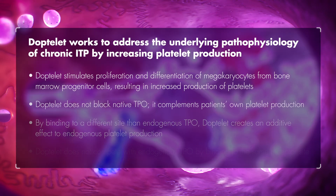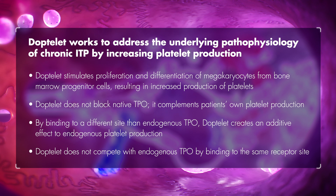DopTelit works to address the underlying pathophysiology of chronic ITP by increasing platelet production. It stimulates proliferation and differentiation of megakaryocytes from bone marrow progenitor cells, resulting in increased production of platelets. DopTelit does not block native TPO — it complements patients' own platelet production. By binding to a different site than endogenous TPO, DopTelit creates an additive effect and does not compete with endogenous TPO by binding to the same receptor site.